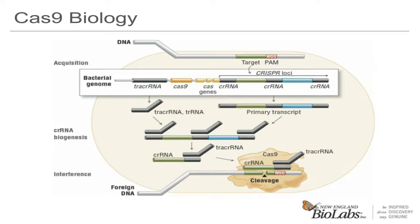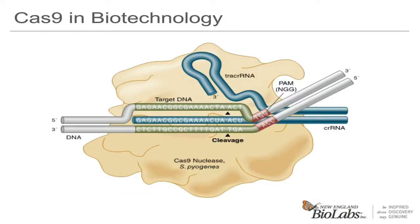In the cells, the Cas9 protein requires the use of a CRISPR-RNA and a tracer RNA for cleavage. Cas9 doesn't function on its own like other nucleases. Cas9 works together with a set of RNAs to guide the complex to its target. In addition to the Cas9 nuclease, two small RNAs are needed.